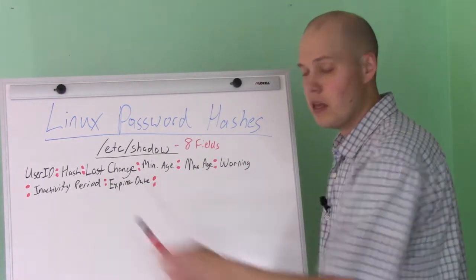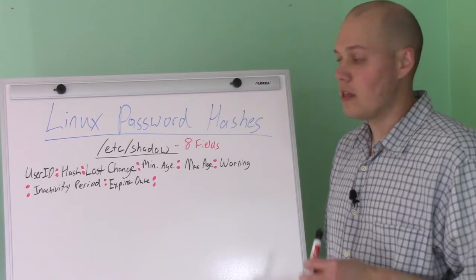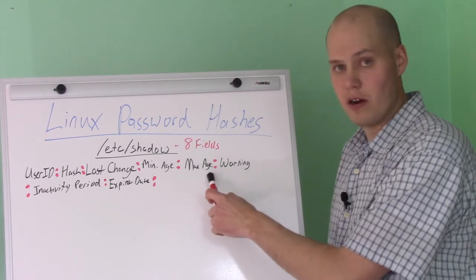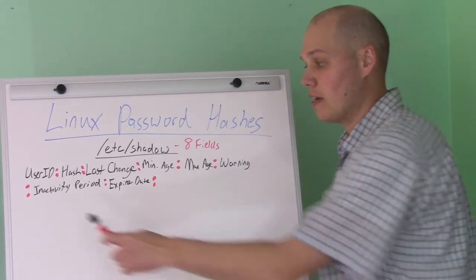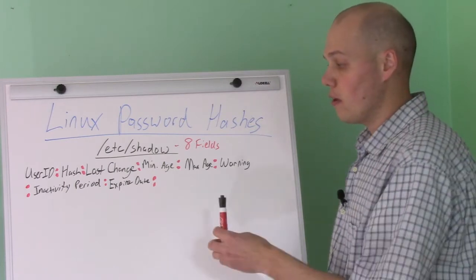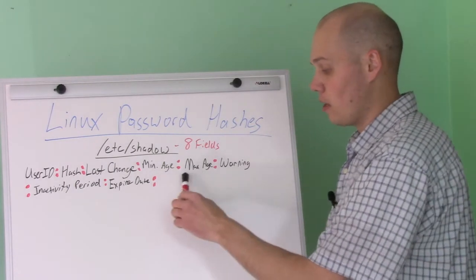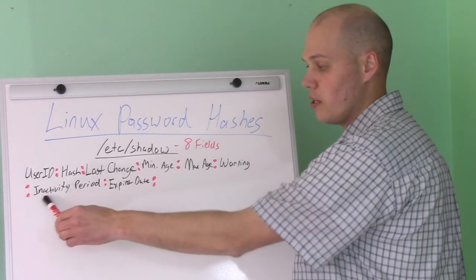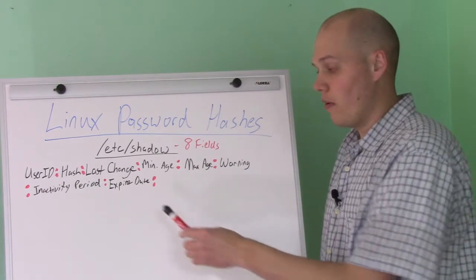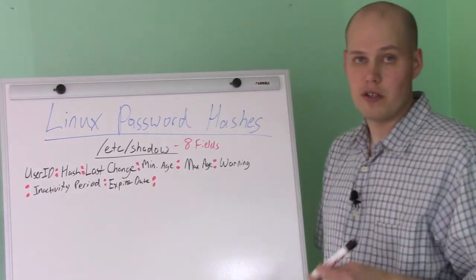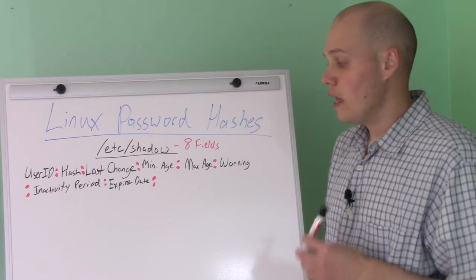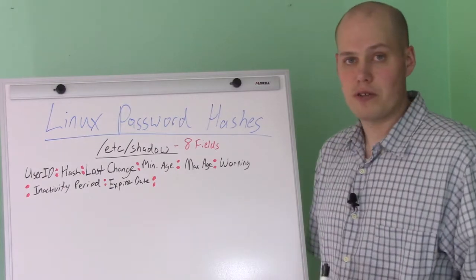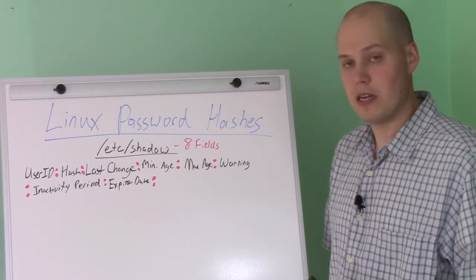Then you have the inactivity period — this is how many days the password will still be accepted after it's expired. For example, say your password expired after a year and you had an inactivity period of ten days; you'd be able to log in for ten more days, but after that you'd no longer be able to log in because you exceeded the inactivity period. The last field is the expire date, which you can set for a user — for example, if you have a temporary employee, you could set their account to expire when they no longer need access.